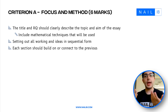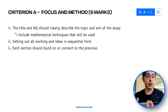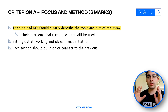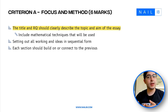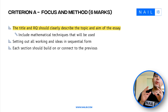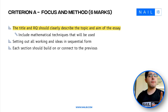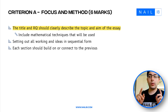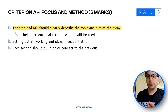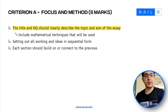Let's talk about criterion A: focus and methods, worth six marks. The research question is very important. The title and research question should clearly describe the topic of the essay and include the mathematical techniques that will be used. If we do not have a good research question and a good title, we will be penalized because there's no focus. 'Graph theory' is very vague — there's no focus for that. They want a specific title and a specific research question that includes the mathematical techniques.